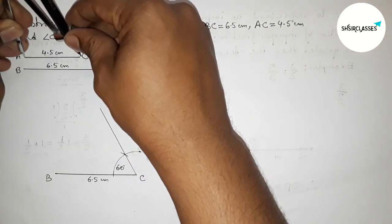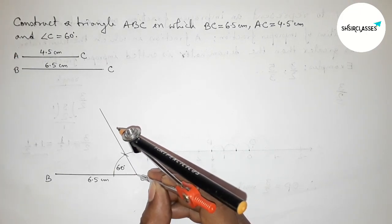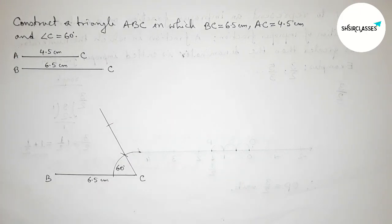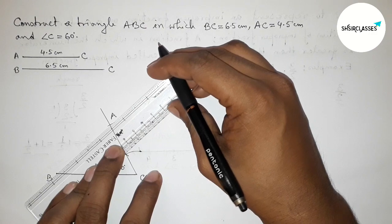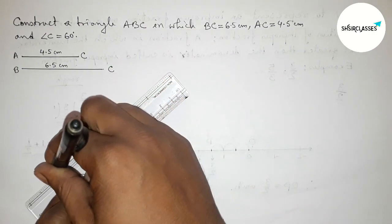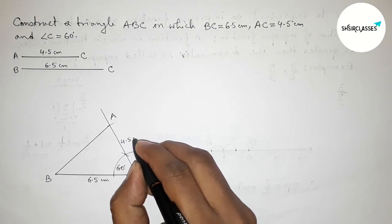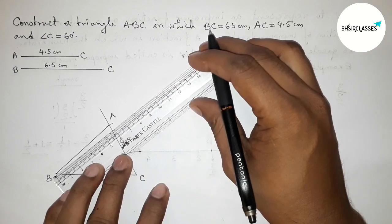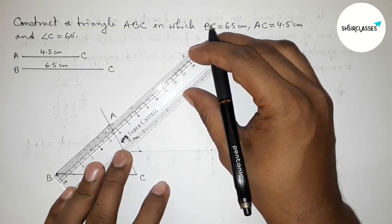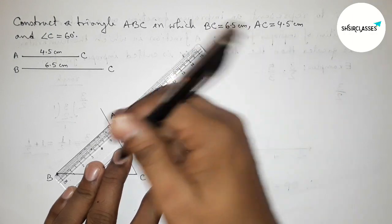Next, taking the length AC equals to 4.5 centimeters and measuring the length of the side AB with the help of a scale.